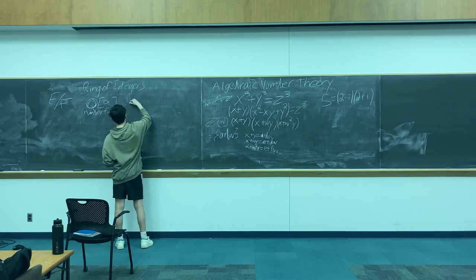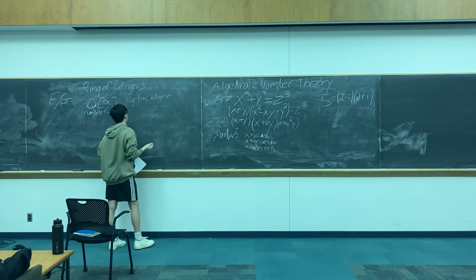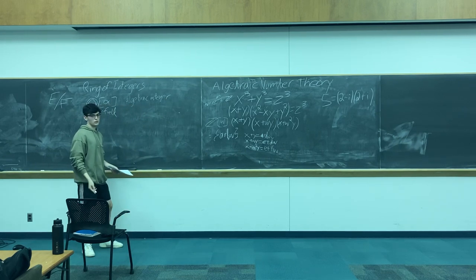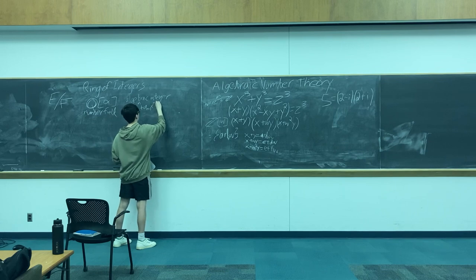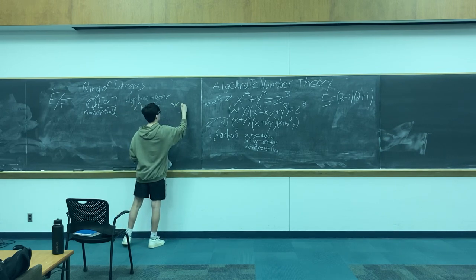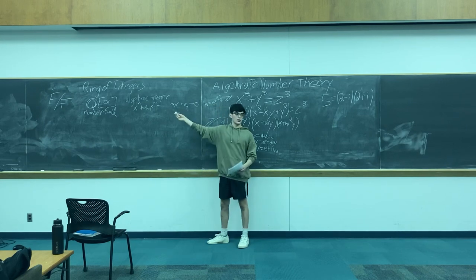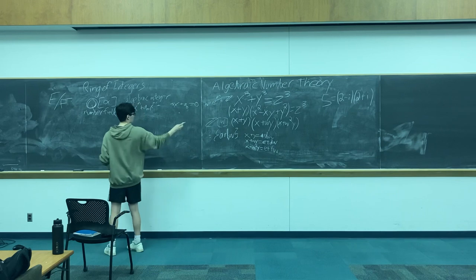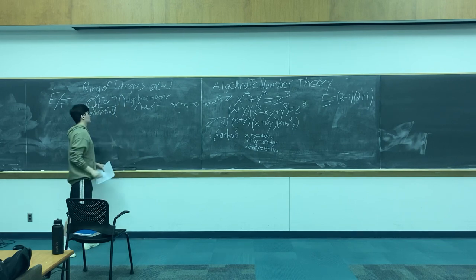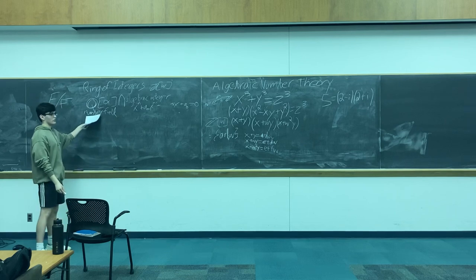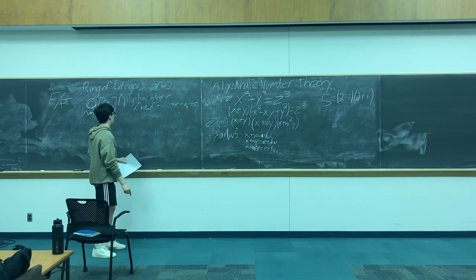Next, we introduce the notion of an algebraic integer. An algebraic integer is just a complex root of a monic polynomial with integer coefficients — xⁿ plus a_{n-1} x^{n-1}, etc. Any root of this polynomial, any solution to this equation equals zero, is an algebraic integer. A ring of integers, like Z adjoined ω, is just the intersection of a number field with all the algebraic integers.